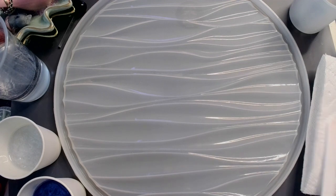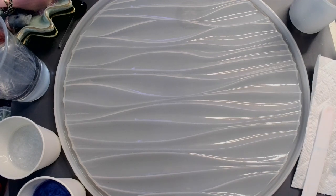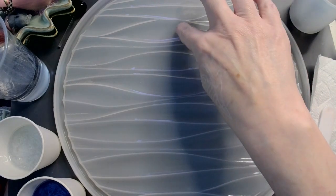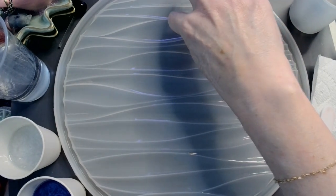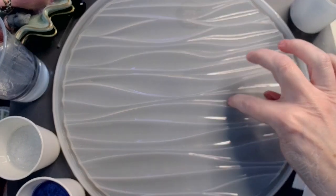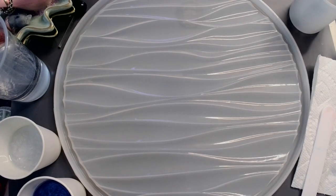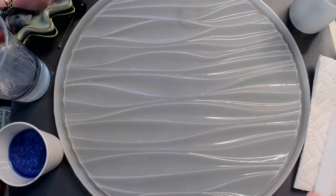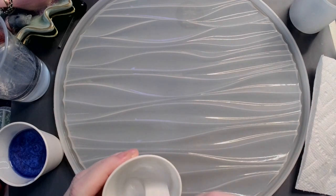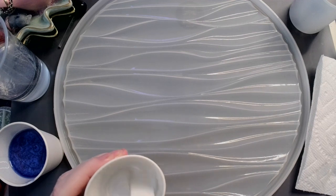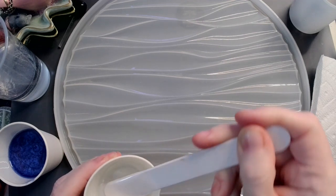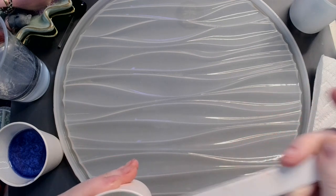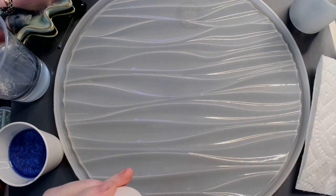The reason I'm not worried about running it through the bubble remover is because this guy is so flat that the resin itself is going to degas a lot easier than if it was in a big deep mold. I need to restir and double check on my white, make sure there's no flaky bits or chunky bits or anything like that.